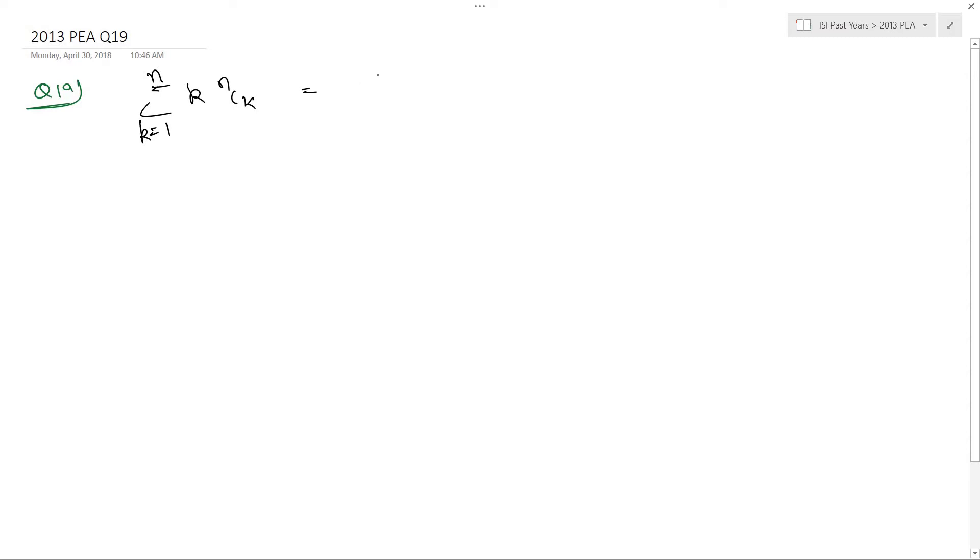This is basically 1 into n c 1 plus 2 into n c 2 and so on till n into n c n. Let me just add here one more term, 0 into n c 0 plus this thing. Because this is 0, this is adding nothing to the sequence. Let this be the sum that I am looking for.